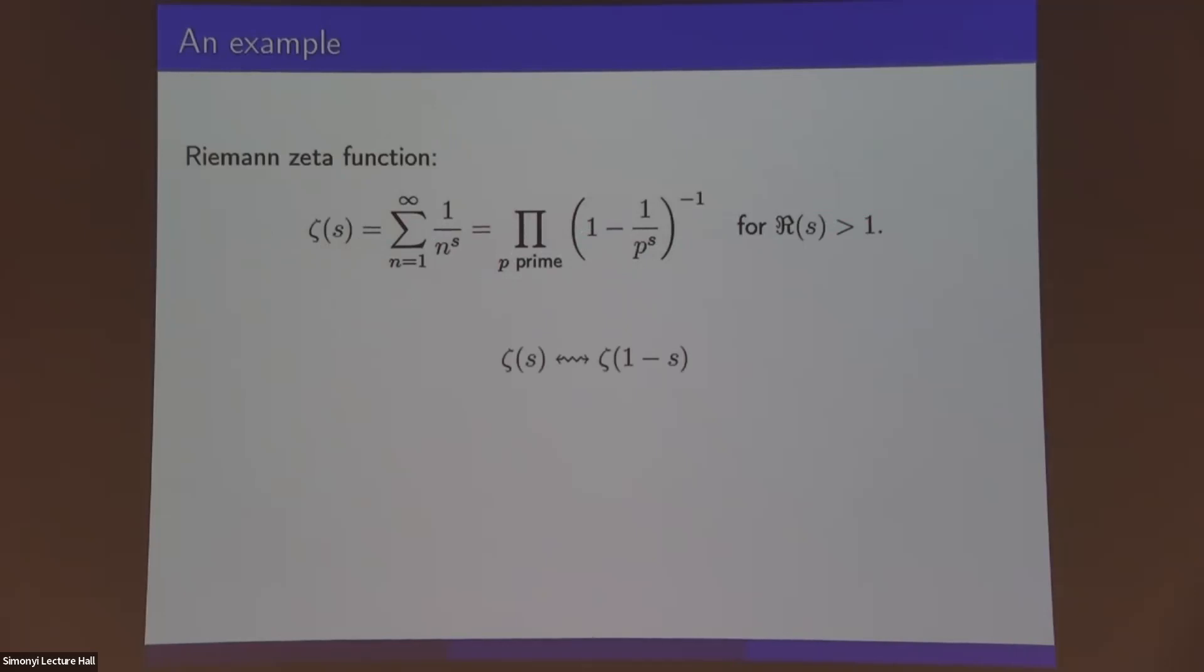The zeta function also satisfies a certain functional equation relating the values at s to the values at one minus s. That will be true for all the objects I'll be talking about in this talk as well. The zeros of the zeta function are encoding arithmetic information. We would like to understand the distribution of such zeros.